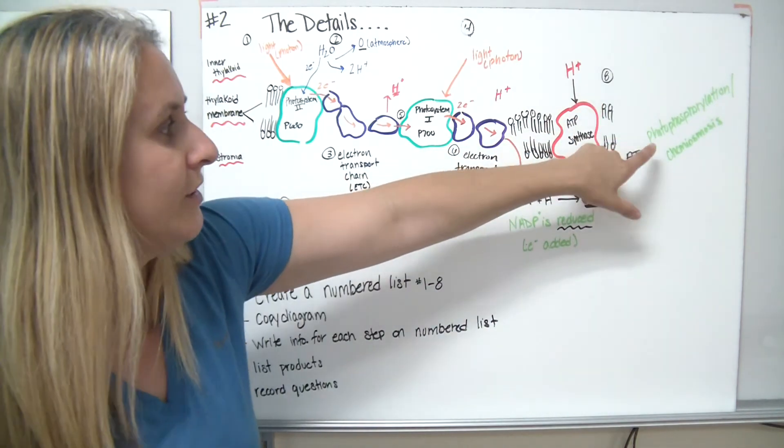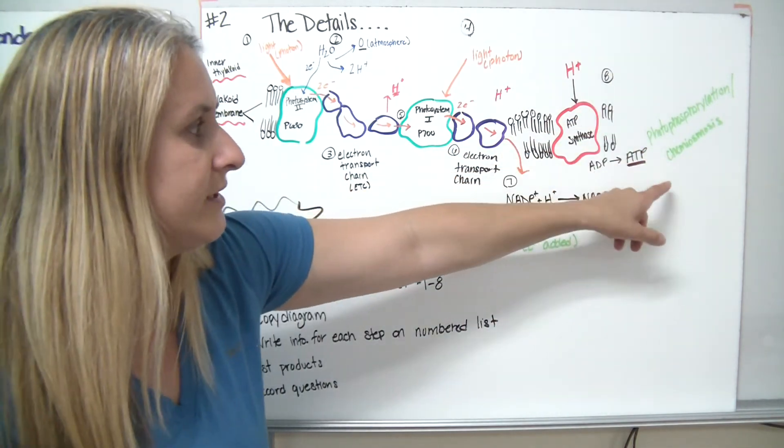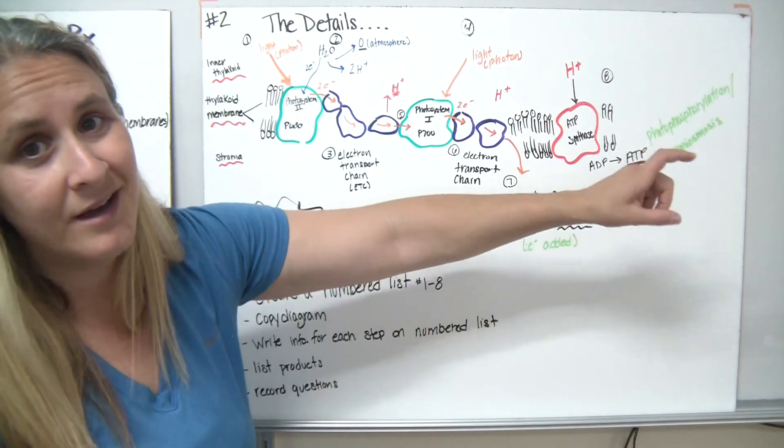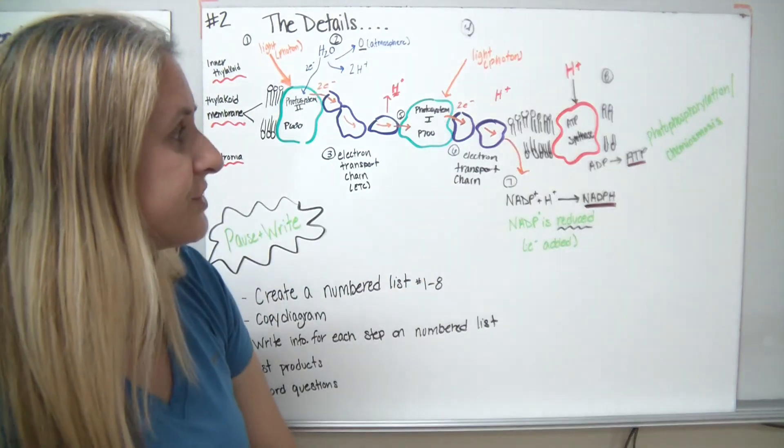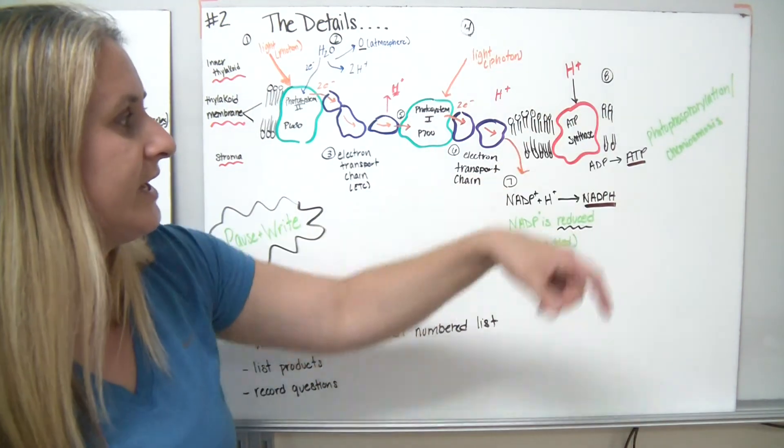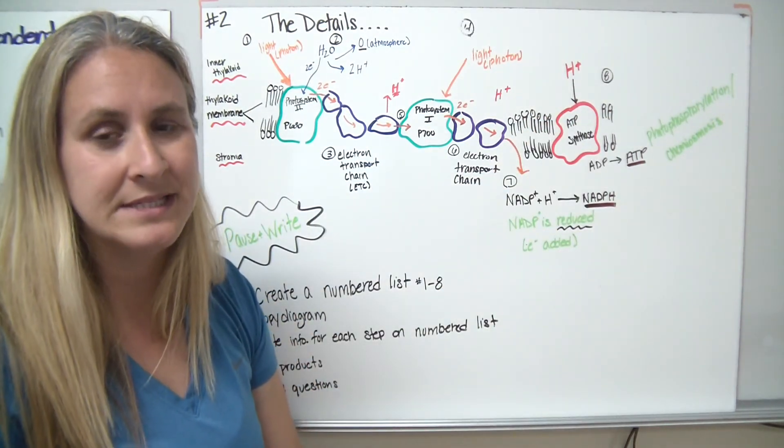It's called photophosphorylation. Phosphorylation, we're adding a P, photo using the energy from the light. And then it's a process of chemiosmosis. We're using chemicals in this case. We have all of our hydrogens and our enzymes. And that's our last step, the excitement of the ATP synthase.